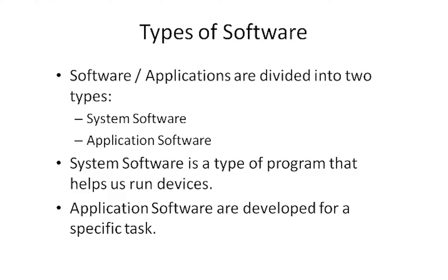Application software are programs designed or developed for a specific task — for example, a calculator, a reservation website, Instagram, Facebook, and WhatsApp. These are all application software. They are not helping us run our devices; they are making our lives easier. They are created for a specific task, and we call them application software.